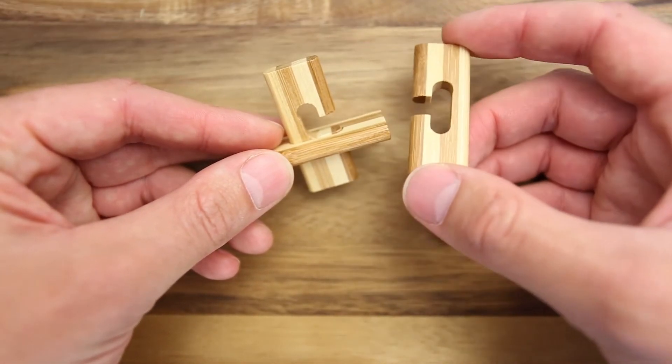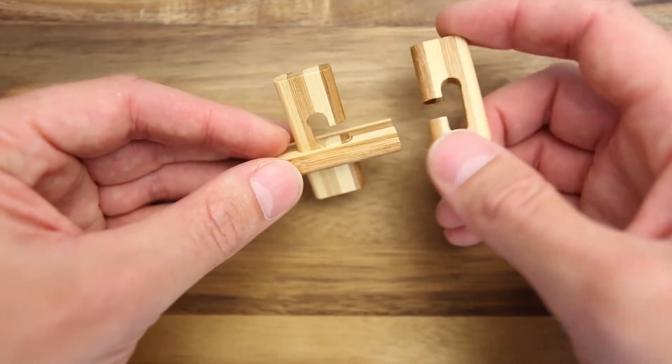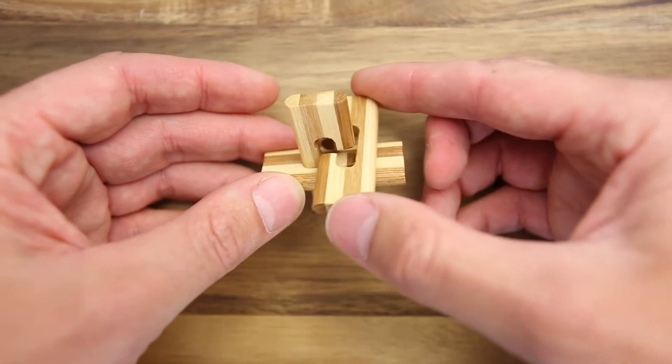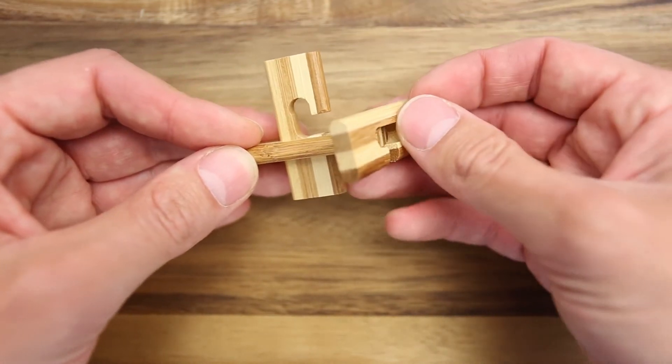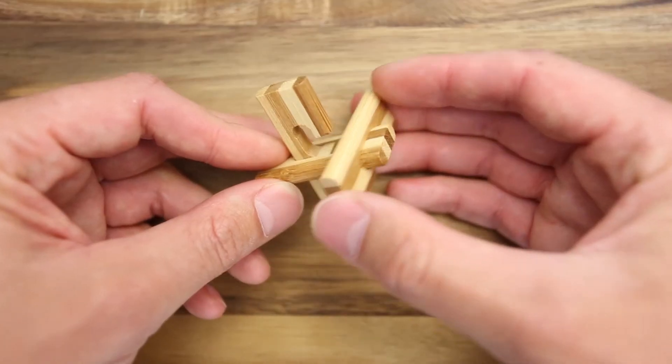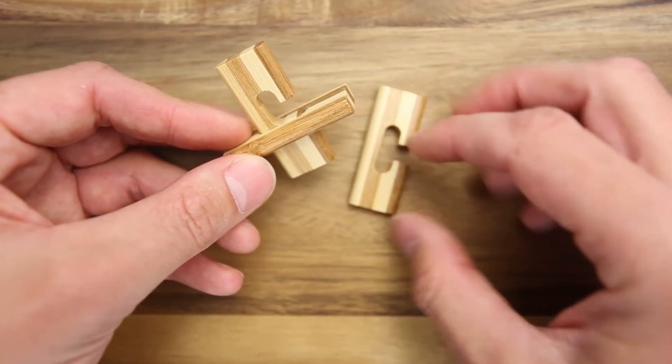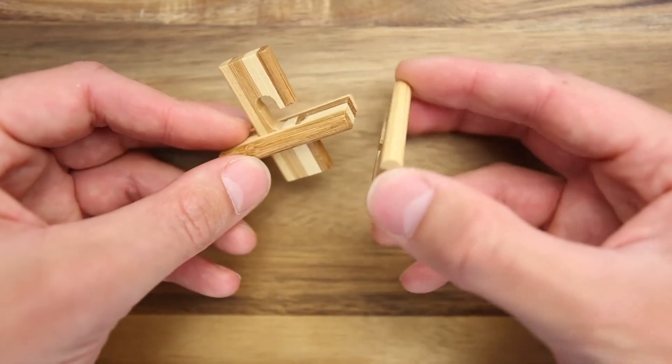Then you have to take the third piece and you have to put it inside like this, so that the cutout will be facing down.